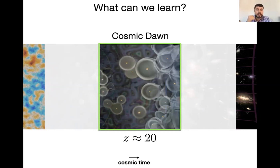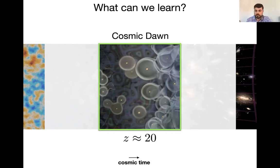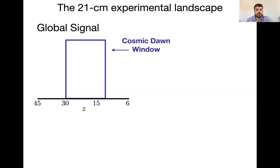The reason to look at Cosmic Dawn now is because there are a lot of different experiments targeting this era through the 21-centimeter transition. Many of them are expected to have a detection in the very near future. So it's a good time to understand theoretically what we can do with the data that will be coming soon. Let me run you through what the experimental landscape looks like.